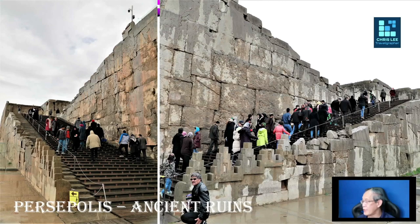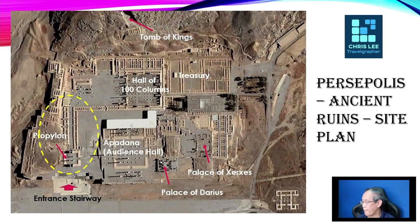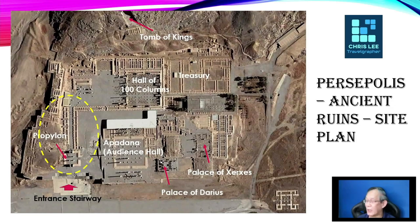So this is the grand stairways that you ascend through left and right — they go on both ways. But during ancient times, the left and right were separated for two different groups of people to ascend. I'm not sure which side is for the royal family or the head of the nation, and which one is for normal people. This is the view of the site. As we enter from this grand stairway, we come to a place they always call the Propylon, also termed as the Gate of All Nations.